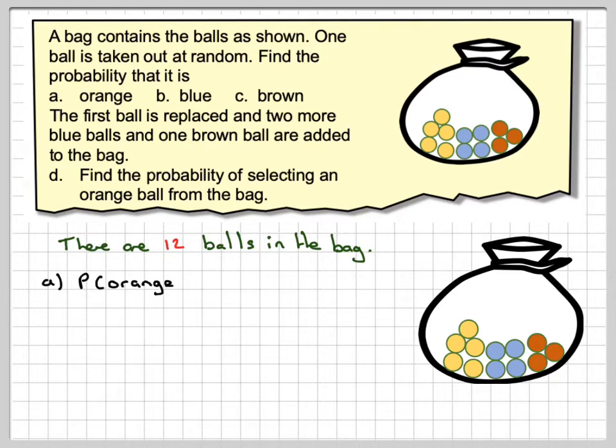Remember the correct notation: P(orange). We can see there are five orange balls out of 12, and that doesn't cancel down, so we'll leave it as 5/12.